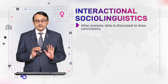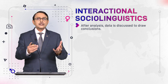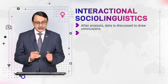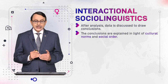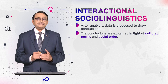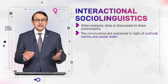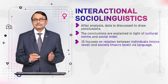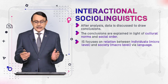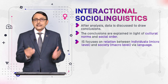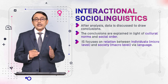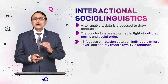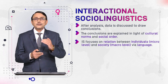After analysis, data is discussed, and from discussion we draw conclusions. This is the whole procedure for application of interactional sociolinguistics. The conclusions are then explained in light of cultural norms and social order. Interactional sociolinguistics focuses on the relation between individuals at the micro level and norms, ideology, and cultural expectations at the macro level. So, IS connects micro-level interactions with macro-level ideology, norms, and social expectations.